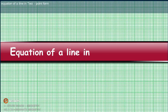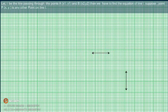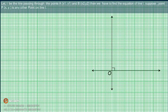Equation of a line in two-point form. Let L be the line passing through the points A with coordinates (X1, Y1) and B with coordinates (X2, Y2). We have to find the equation of line L. Suppose point P with coordinates (X, Y) is any other point on line L.